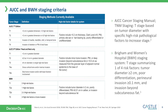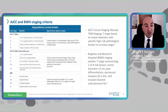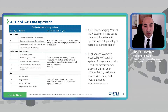The AJCC 8th edition defines tumor stage largely on size alone. As you get into the higher T stages, a single high risk factor automatically categorizes the tumor as T3, and T4s are those that invade bone or beyond.